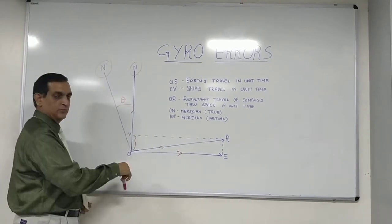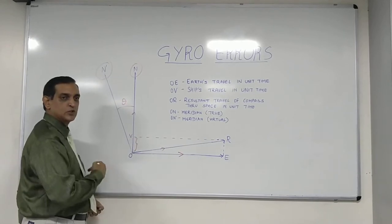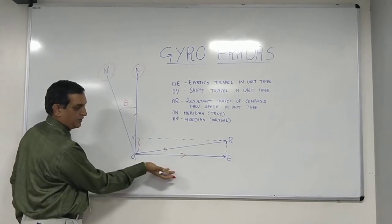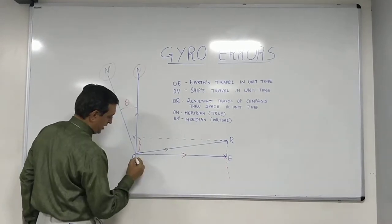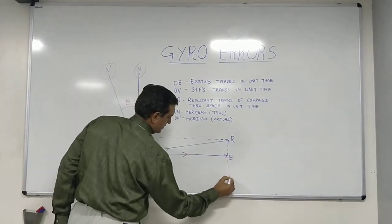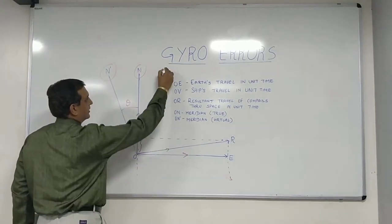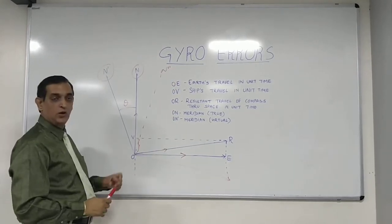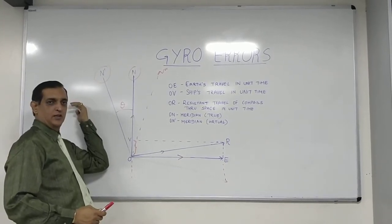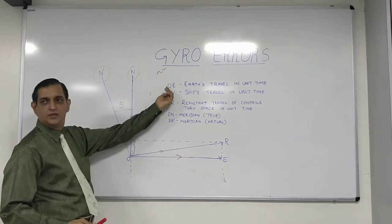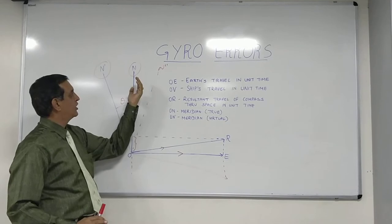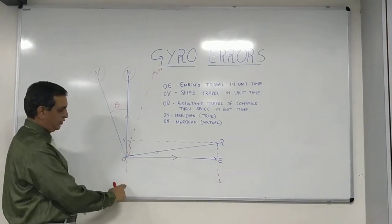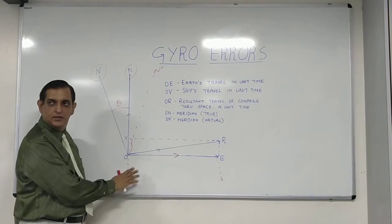Now, this as you can see is maximum on northerly courses, as we said 0 on east-west. If the course is southerly, that means the course is in this direction. You can have an image of this here. So this would come down. Again, same unit time, etc. And you would have a resultant like this. This would give us the gyro settling somewhere here. Let's call it N 2 dash. Which means on a northerly course, the error is westerly. On a southerly course, the error is easterly. Clear? Northerly course, the error is westerly. Southerly course, the error is easterly. Because this component now would go down. You are on a course 180. This component is here. Is this part clear?